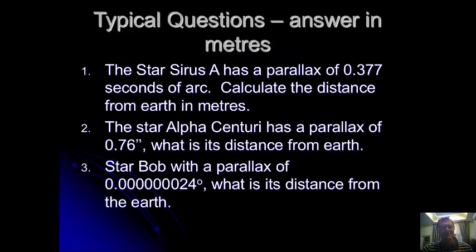Here's some type of questions. I'm looking for answers in metres. Star Sirius A has a parallax of 0.377 seconds of arc. Can you calculate the distance in metres? Alpha Centauri has a parallax of 0.76 arc seconds. What is the distance to the Earth? And star Bob with a parallax of 0.00000024. What is the distance from the Earth? Do these calculations.